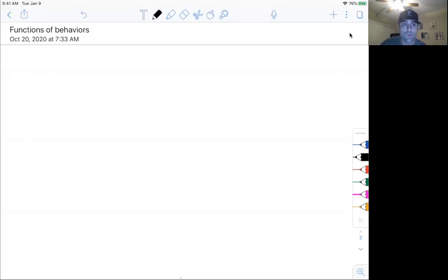When you think about behavior, behavior happens typically to get something or get rid of something. So what are not functions? Frustration is not a function. Mad is not a function. Their disability or their autism is not a function. Those aren't the reasons the behavior is happening.